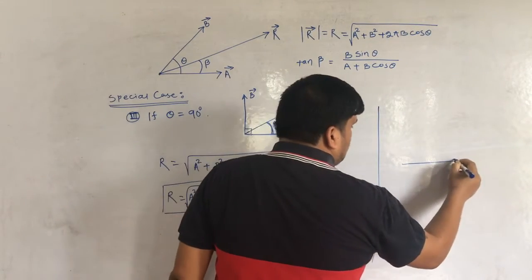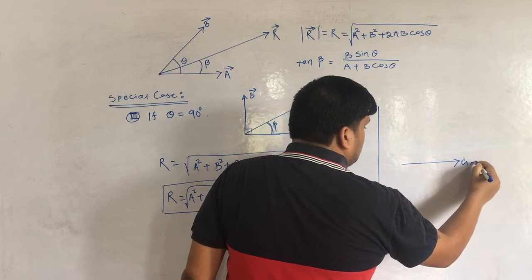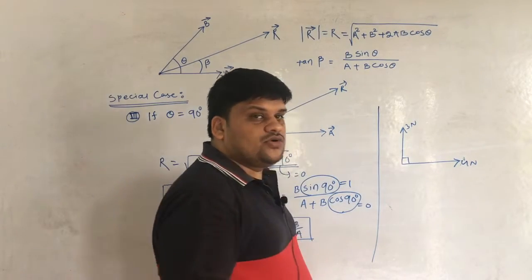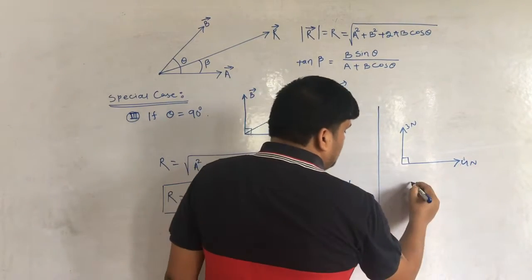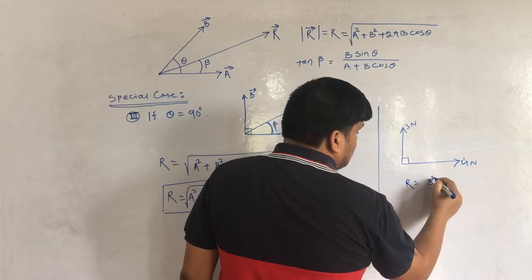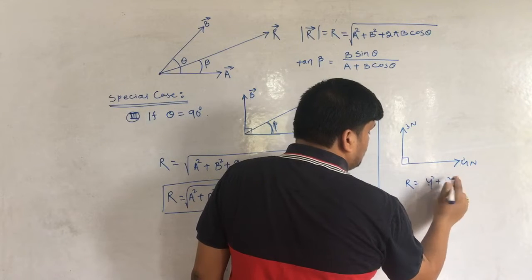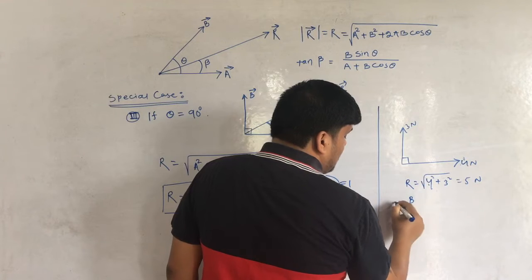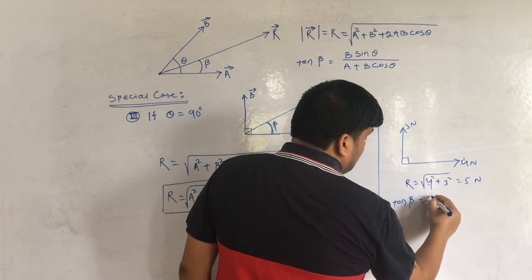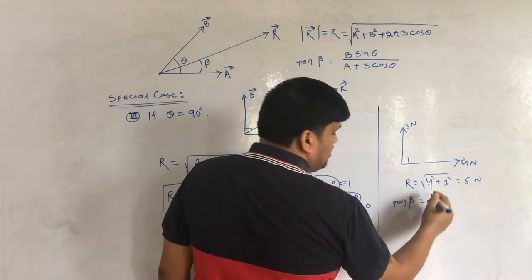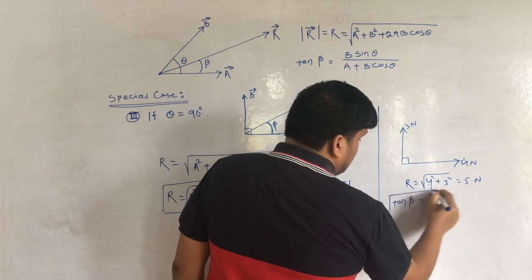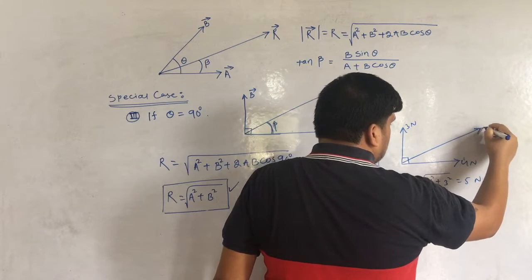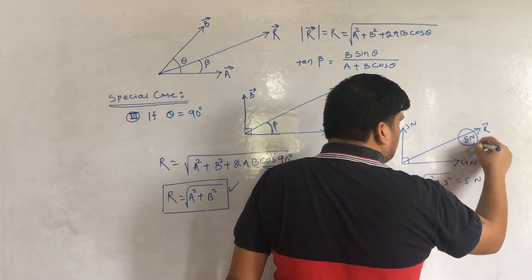For example, if 4 N and 3 N act at 90° to each other: R = √(4²+3²) = √(16+9) = √25 = 5 N. And tan β = 3/4, so β = tan⁻¹(3/4). If θ = 90°, use this simpler formula directly instead of the general one.